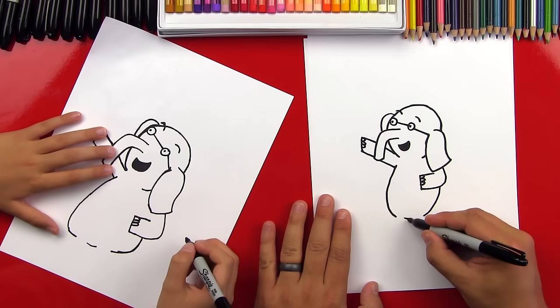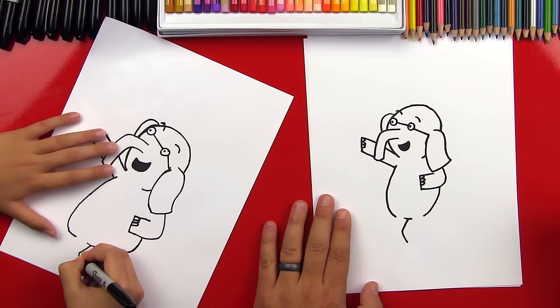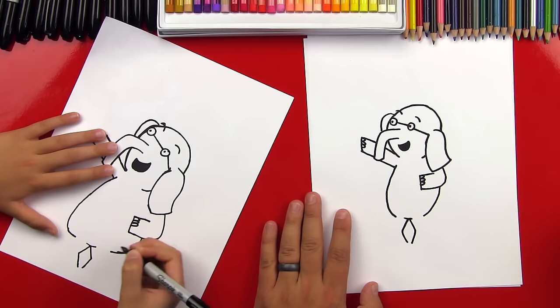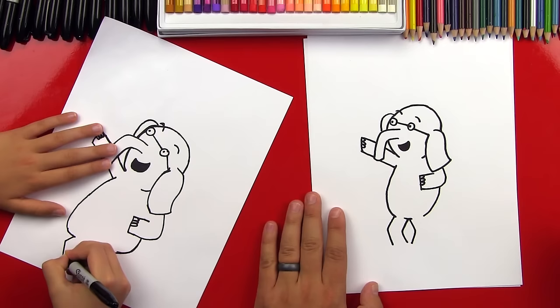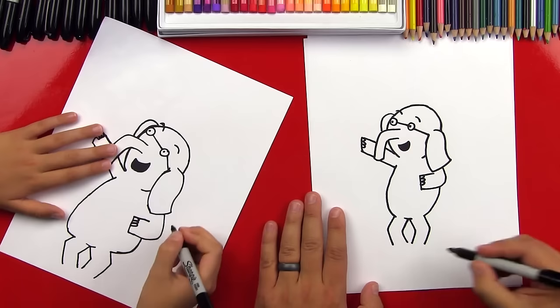And then a bent line going the other way. Now we're going to draw the outside of his legs. So another bent line. And one on this side. Then connect the bottoms with a curve.